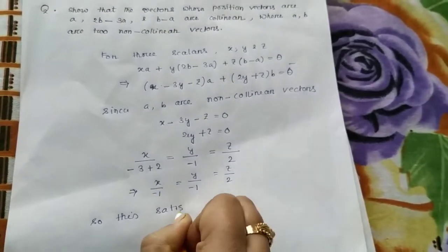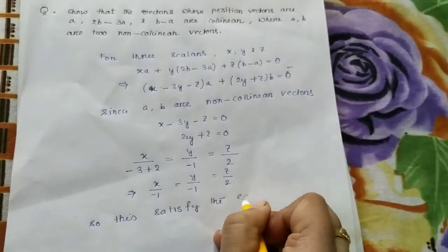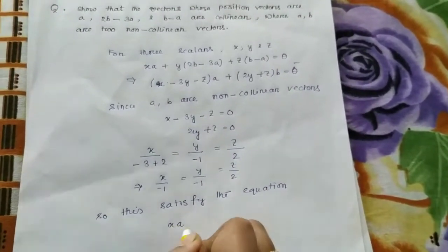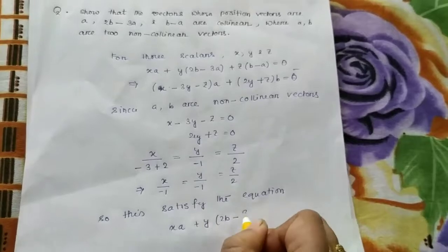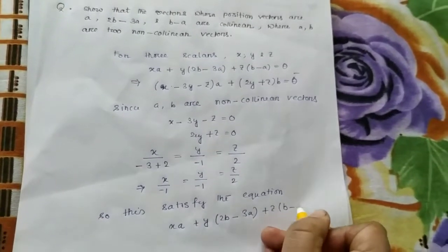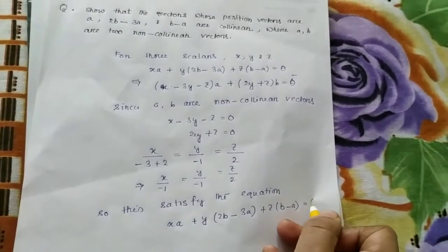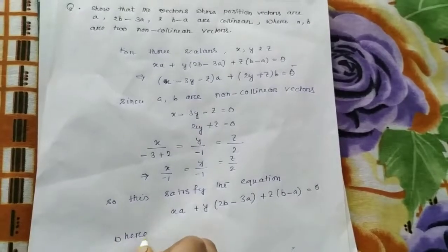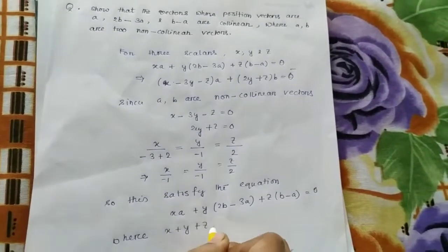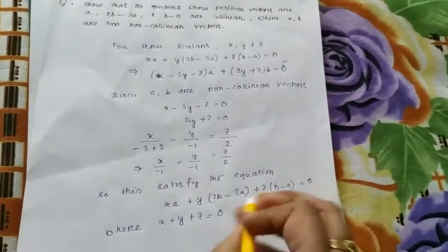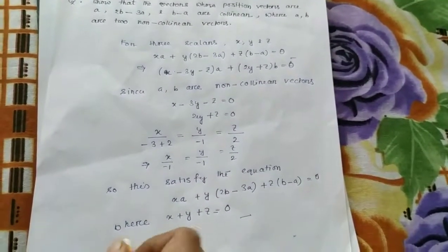Do the values x, y, z solve the problem above? This satisfies the equation. So, x plus y plus z equal to 0. This shows that the given vectors are collinear.